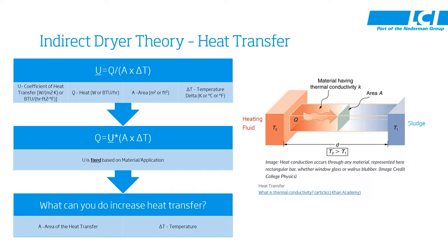Now we know U is fixed based on the material and application. So what can we do to increase the heat transfer? We either have to increase the area of heat transfer — which means a bigger dryer, a larger building, cost, etc. — or we have to increase the delta T, which means we have to increase the temperature of the heating fluid. There's only so much temperature we can use on the heating fluid, so it's a limitation as well.